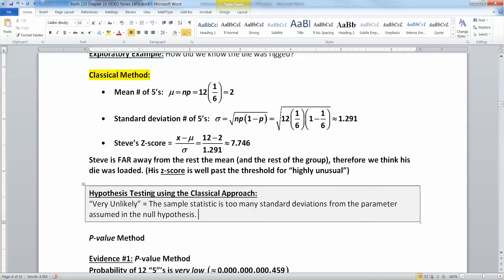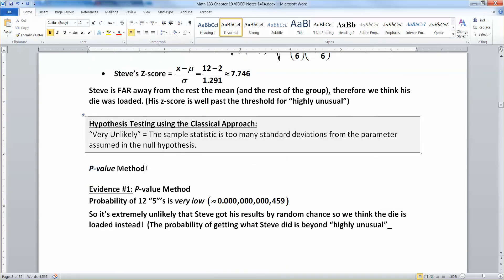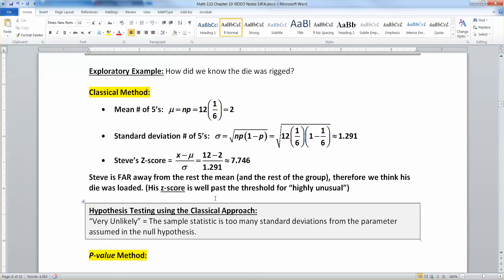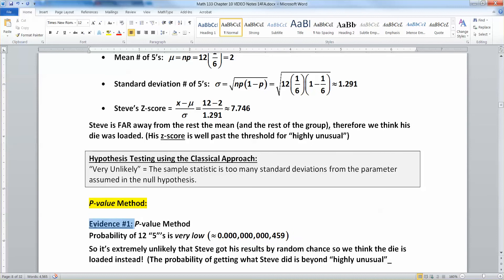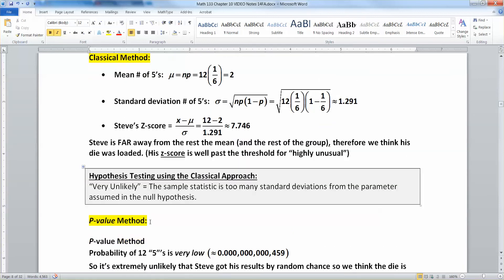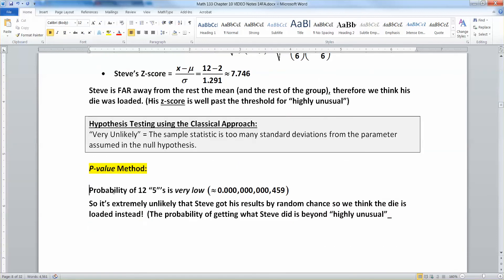All right, then there's the p-value method. The p-value method considers the probability and says you can reject the null hypothesis, you will get a significant result if your probability of getting what you got is so low. If the probability of getting what you had is so low, then it's unusual enough to say that I reject the null hypothesis.